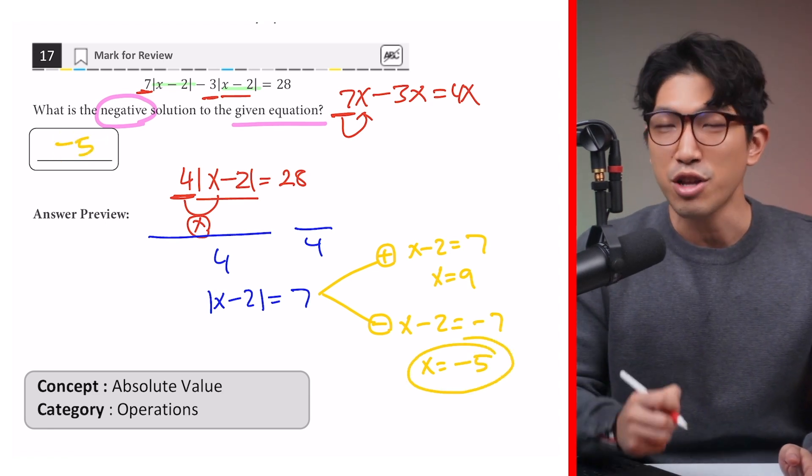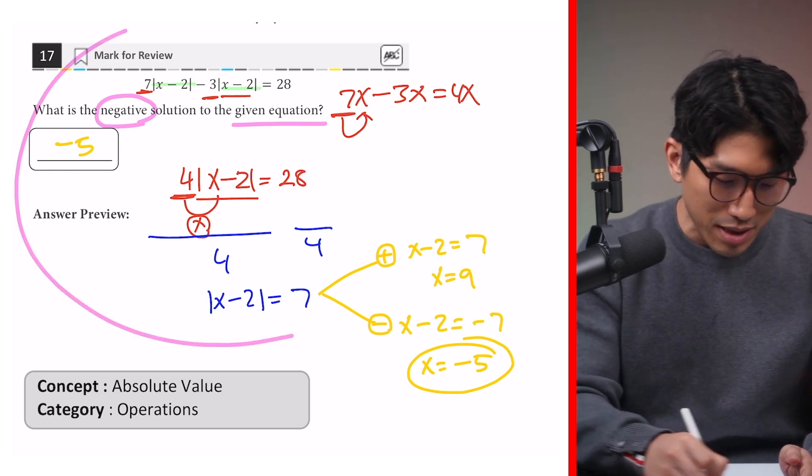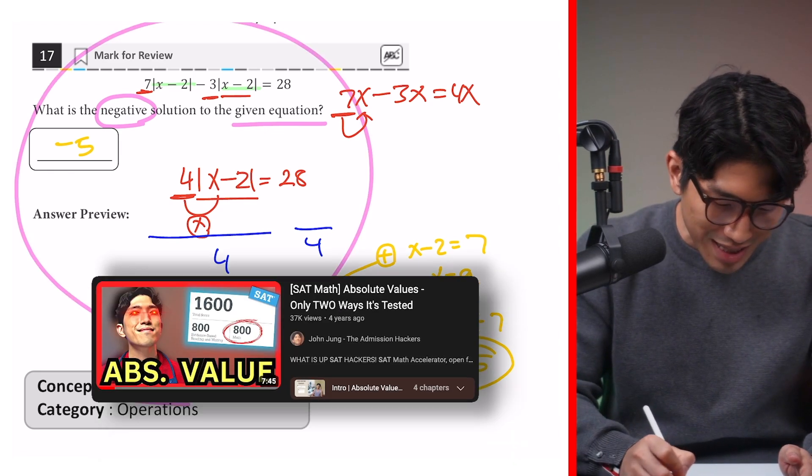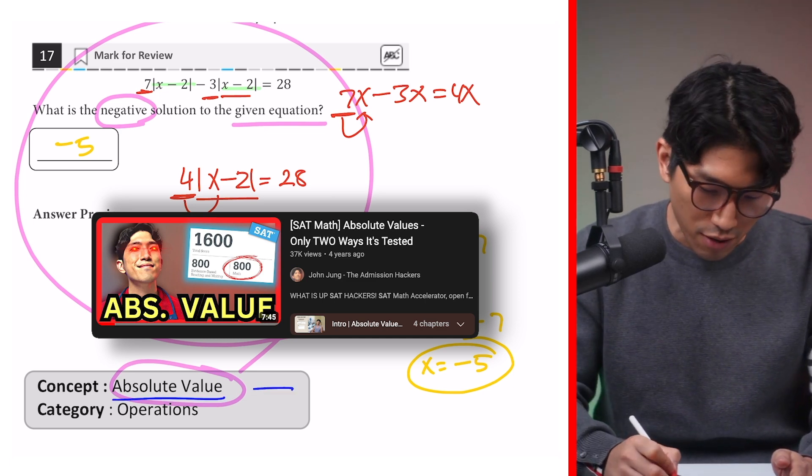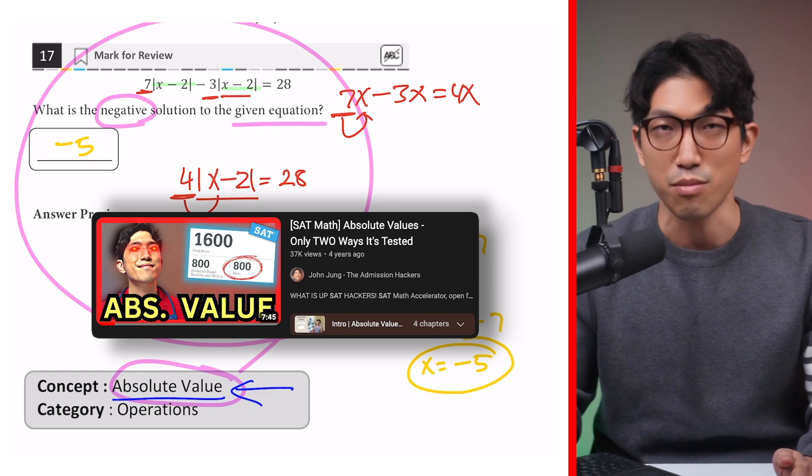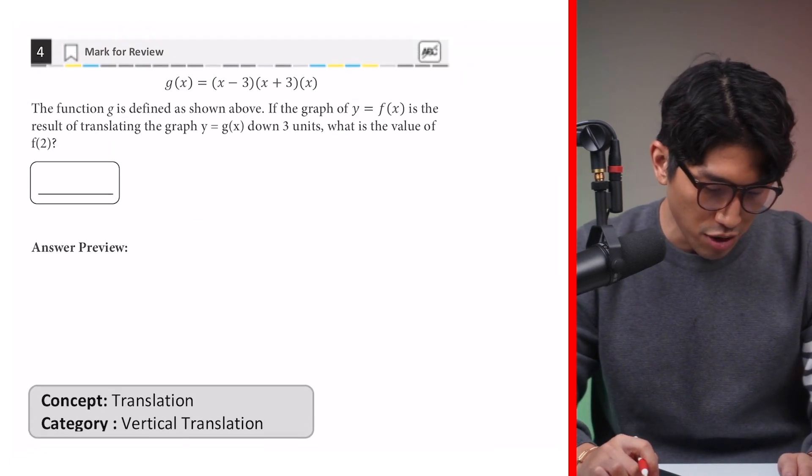So for the digital SAT, everything you need to know about absolute value is going to be this plus what is going to be inside this concept summary right here. You can't really see the link over here, but once you download the PDF and click right here, it's going to take you to a concept summary. And now let's move on to the second question, which looks something like this.